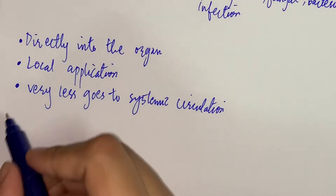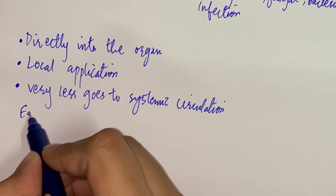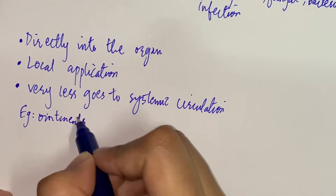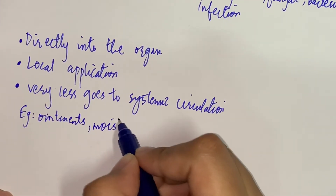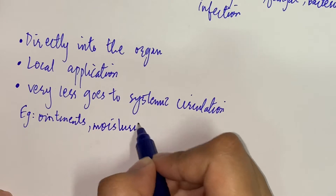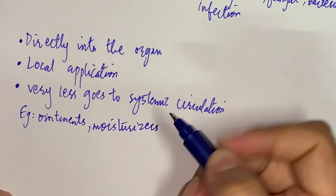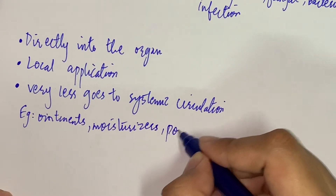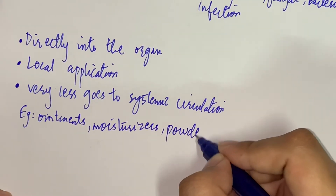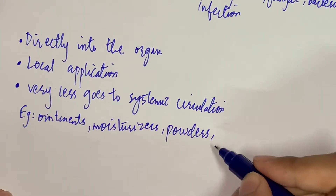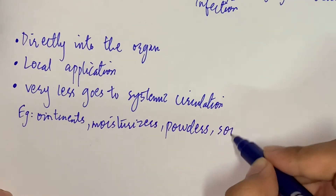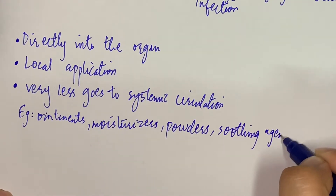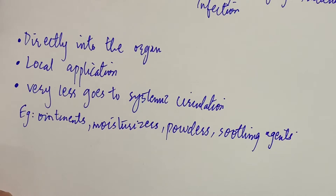Examples of topical forms include ointments, moisturizers, powders, and soothing agents. These are all examples. Now we have the types of topical routes.